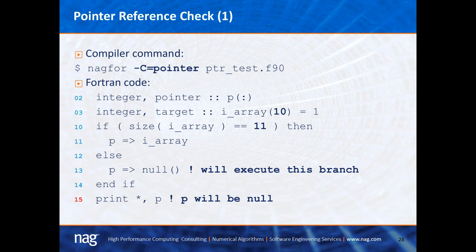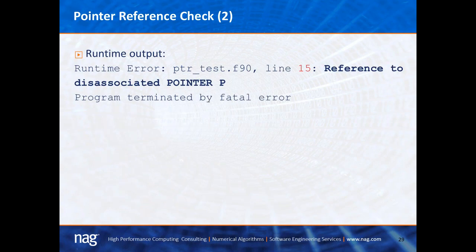The next check is for pointer reference checking. Line 2 declares a pointer P and line 3 an integer array. Line 10 checks if it is size 11, which is not the case, so it goes to line 13 where P is associated with null — making it a null pointer. Line 15 prints P, which will be null. Executing this code produces: 'runtime error, line 15, reference to a disassociated pointer P, program terminated by a fatal error.'